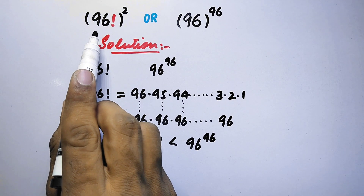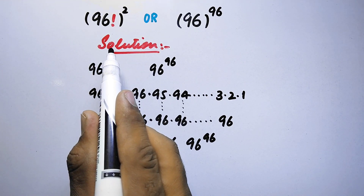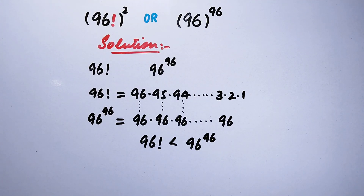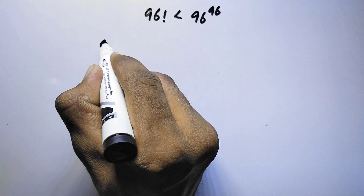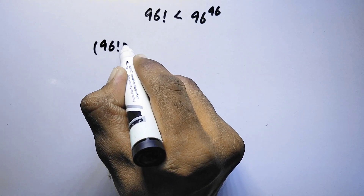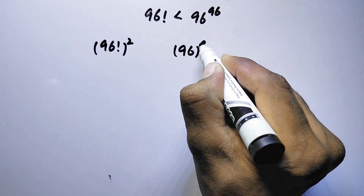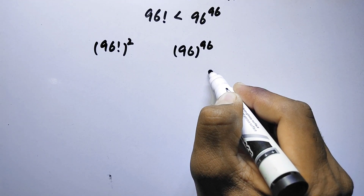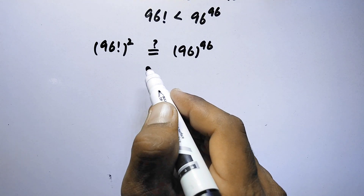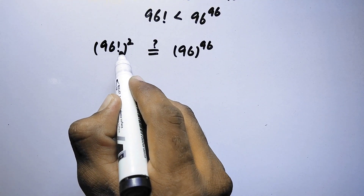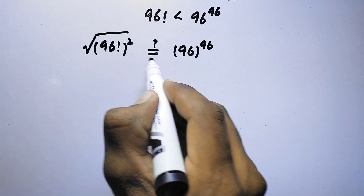However, in our case we have 96 factorial to the power square, which is going to be a very large number. We will write both values: 96 factorial to the power square, and 96 to the power 96, and set them equal to each other. To simplify the solution we need to eliminate the square, so we will take the square root on both sides.